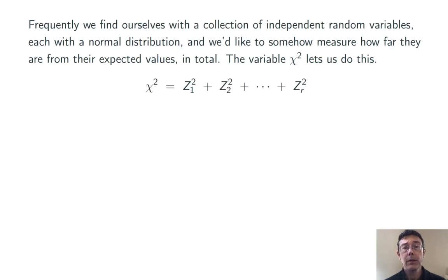It's defined like this. For each of those independent random variables, compute a z-score, square it, and then add up all those values.